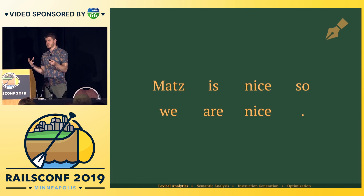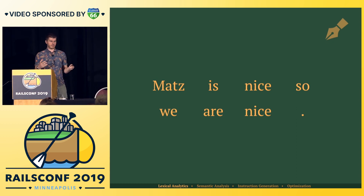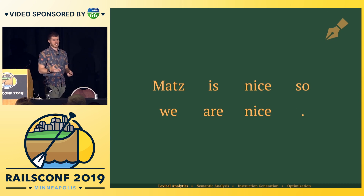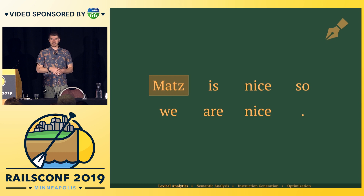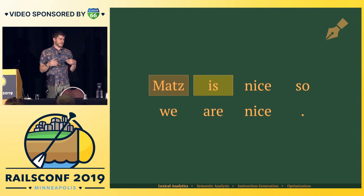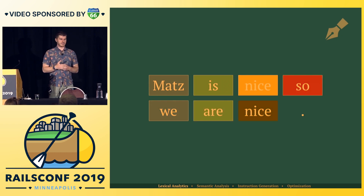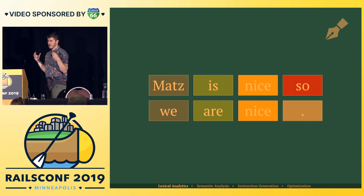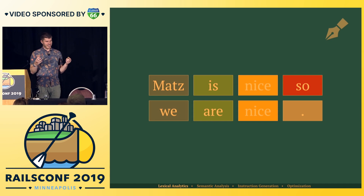This is still the process that other programming languages go through, but for our purposes we're writing an English language compiler — this is what your brain is doing in your head. We have nouns, 'is' is the to-be verb, 'nice' is an adjective, 'so' is a conjunction, and we have a period to end it. These are our tokens.